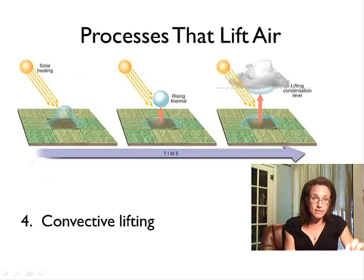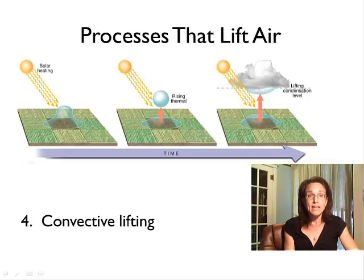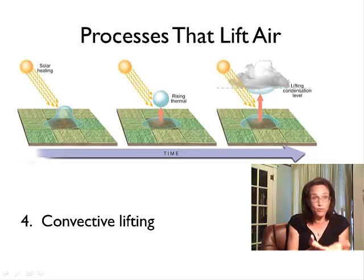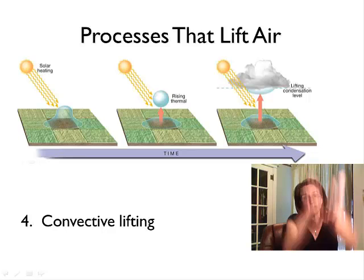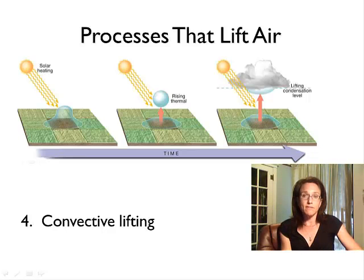And then the last is a very important one for formation of thunderstorms is what we call convective lifting, and that's when the Earth's surface is hot. By conduction, it heats the air that's adjacent to the Earth's surface. That hot air is less dense, and so it rises, and that's what we call convective lifting.